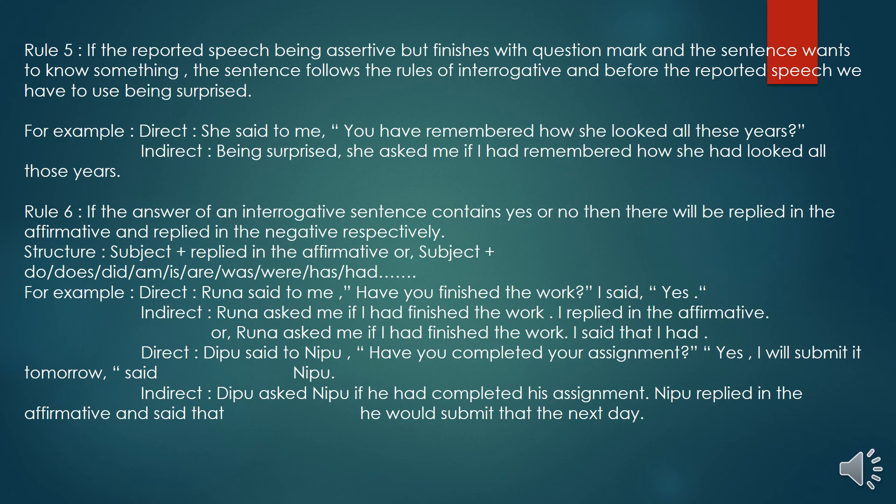Rule number five. If the reported speech, being assertive, but finishes with a question mark, and the sentence wants to know something, the sentence follows the rules of interrogative, and before the reported speech, we have to use 'being surprised'. For example, she said to me, 'You have remembered how she looked all these years?' Being surprised, she asked me if I had remembered how she had looked all those years.